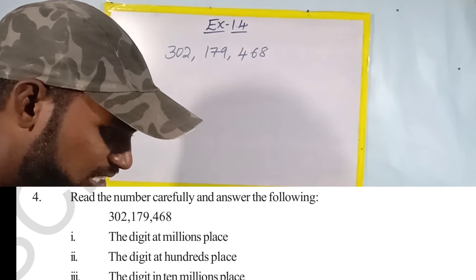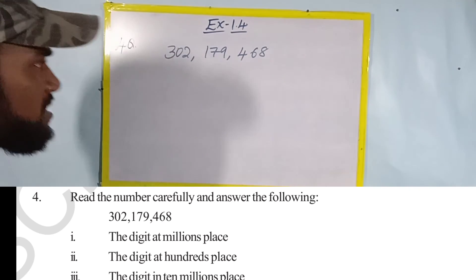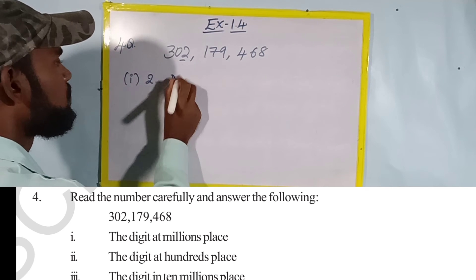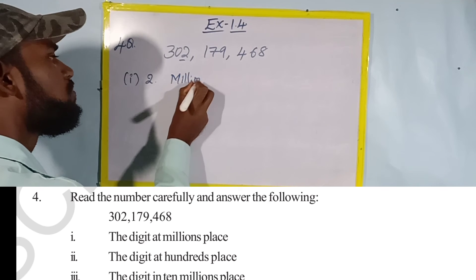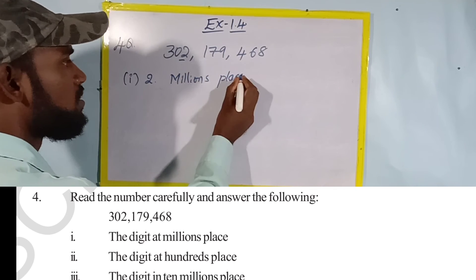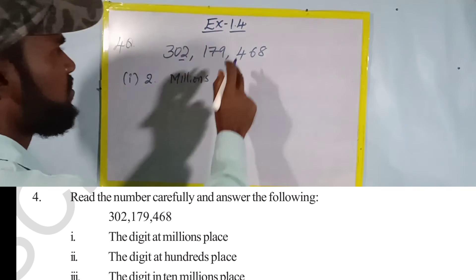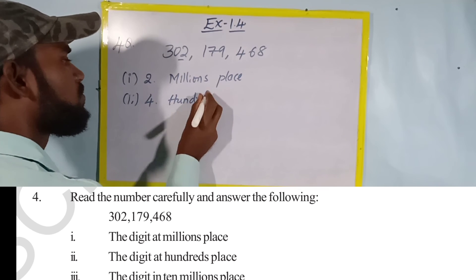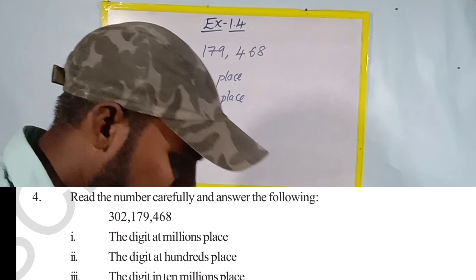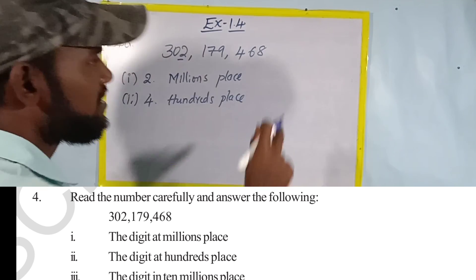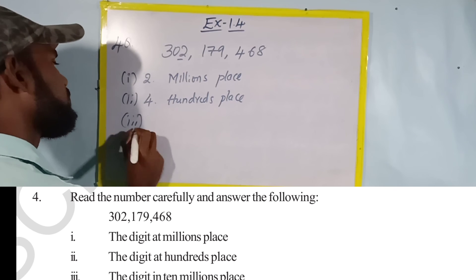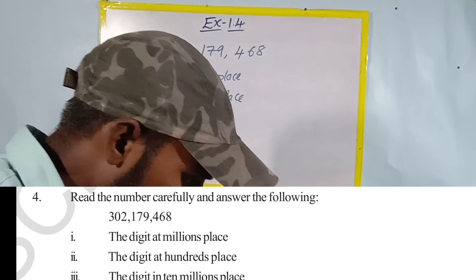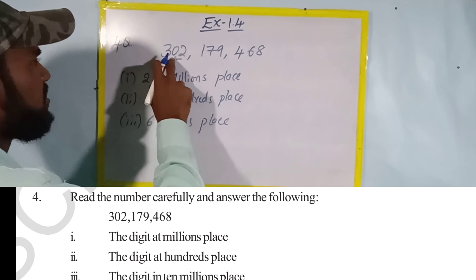Now the questions: what is the digit at the millions place? — three. What is the digit at the hundreds place? — four. What is the digit at the tens place? — six.